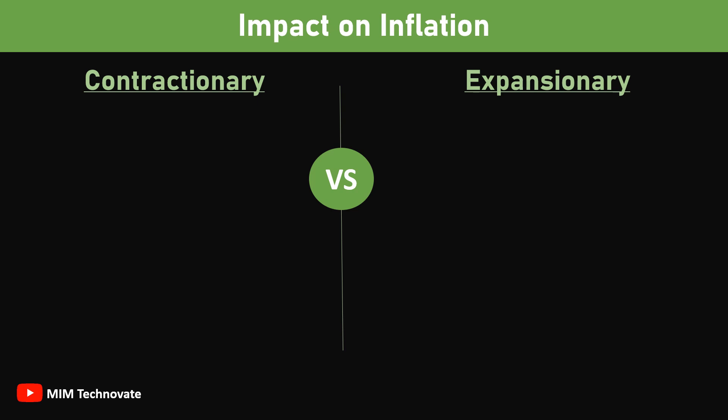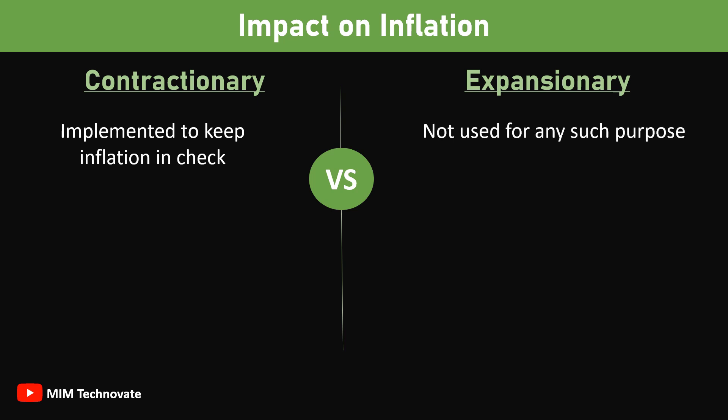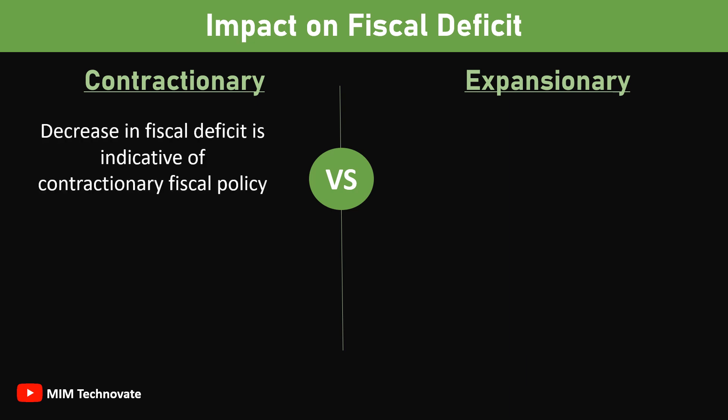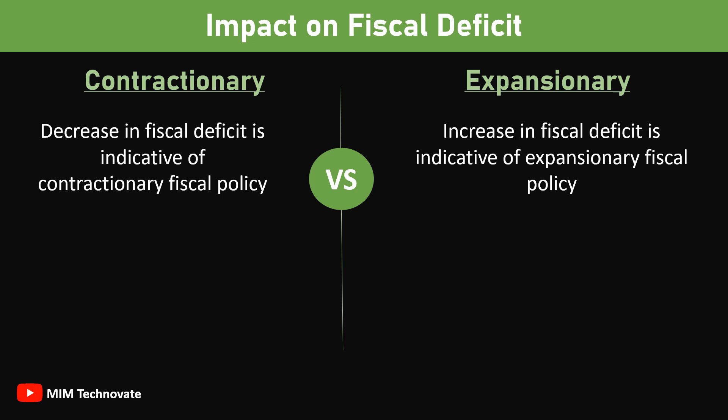Impact on inflation: contractionary fiscal policy is implemented to keep inflation in check, whereas expansionary fiscal policy is not used for any such purpose. Impact on fiscal deficit: a decrease in fiscal deficit is indicative of contractionary fiscal policy. On the other hand, an increase in fiscal deficit is indicative of expansionary fiscal policy.